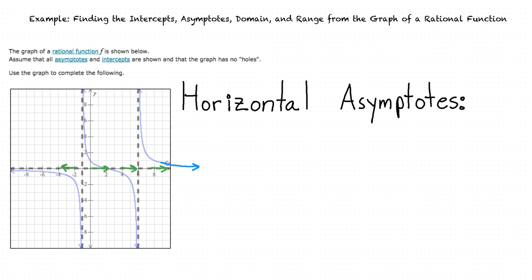The same thing is true as we approach negative infinity along the x-axis. Because the function approaches the value y equals 0 as x increases to positive or negative infinity, we know that y equals 0 is a horizontal asymptote.